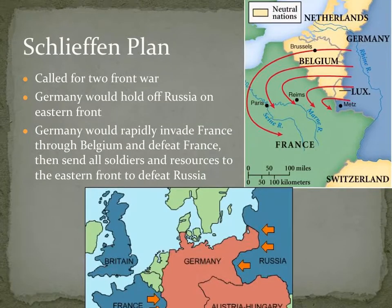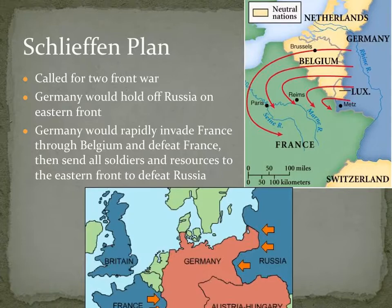The Schlieffen Plan called for a two-front war. Germany was only at war against Russia at this point but assumed Britain and France would quickly enter to aid Russia. So the plan said: since Russia is going to be the bigger threat, Germany would try to hold off Russia in the east for a while, then quickly defeat Britain and France in the west, and then focus all attention back east. Germany would quickly invade France through Belgium, defeat France, then send all soldiers and resources back east to fight Russia.